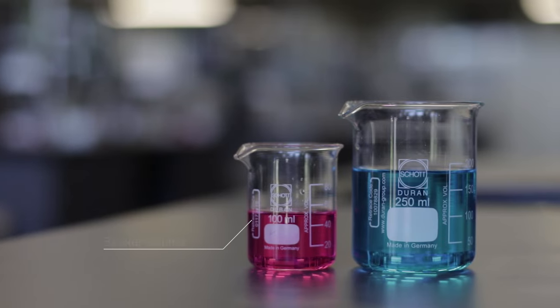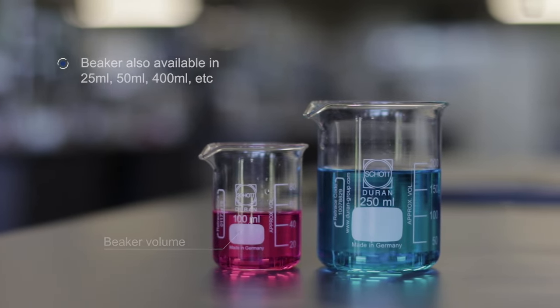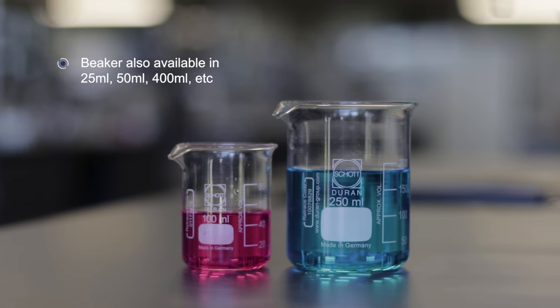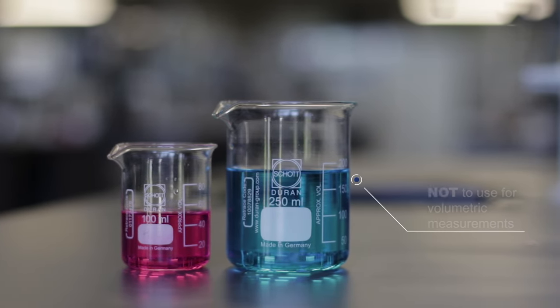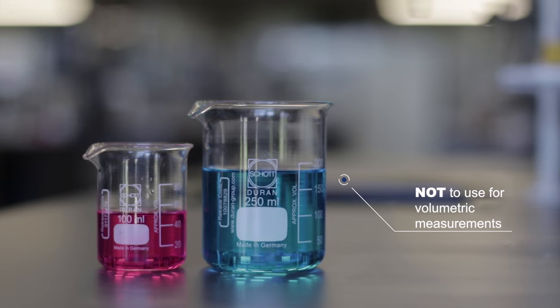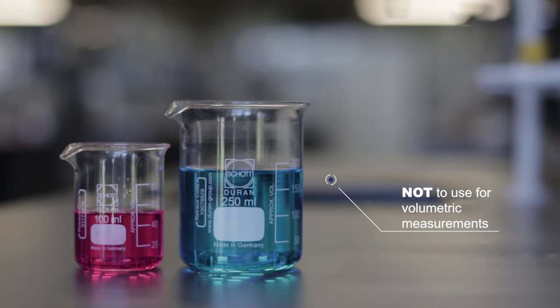A beaker has a cylindrical shape with a flat bottom and is available in a wide range of sizes. A beaker is used for stirring, mixing or heating liquids and is not used for precise measurements.